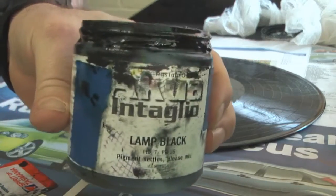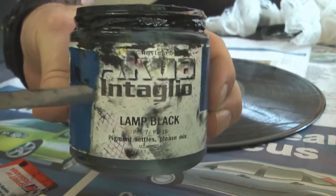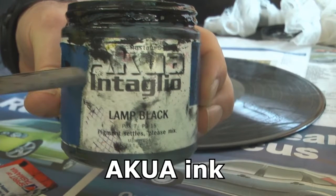Now I'm using Akua inks. The thing with this is that it doesn't dry through evaporation. It dries through absorption. If you lay it on too thick, it's never going to dry. So the trick is to put it on thin and really wipe it back. It's the only way to get this thing to dry.